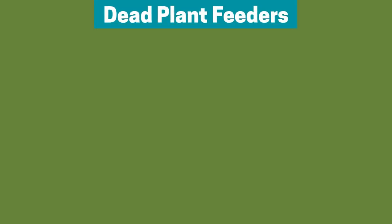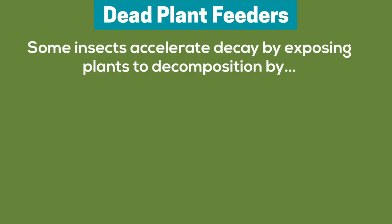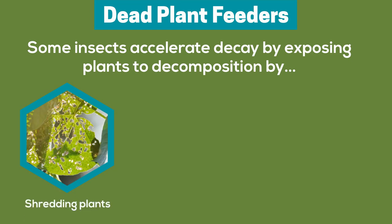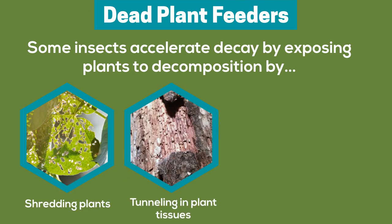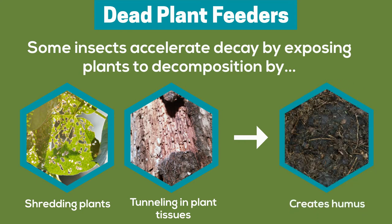Bugs that feed on dead plants accelerate decay by exposing plants to decomposition. They can do this by shredding and eating leaves and other plant materials and by tunneling into plant tissues. Both of those actions catalyze plant decay, which eventually results in nutrient-rich humus that makes soils healthy.